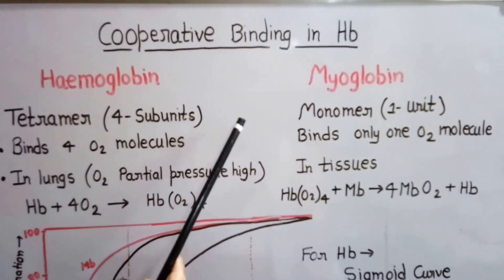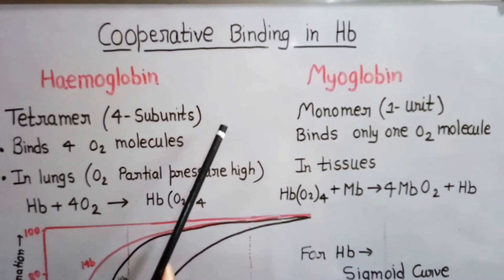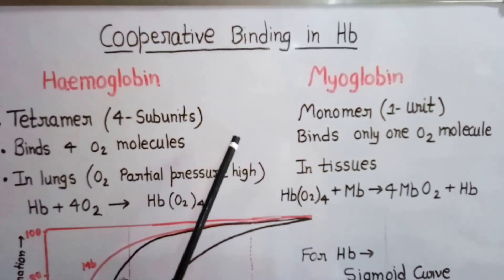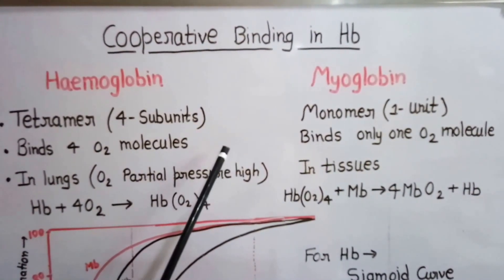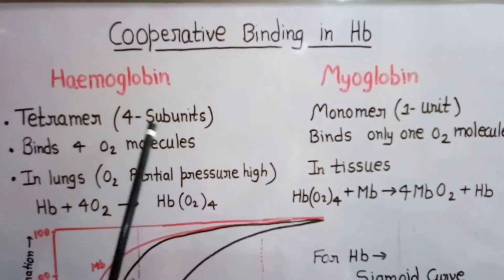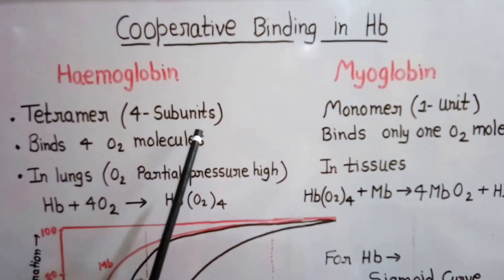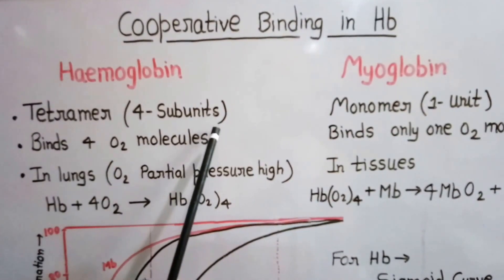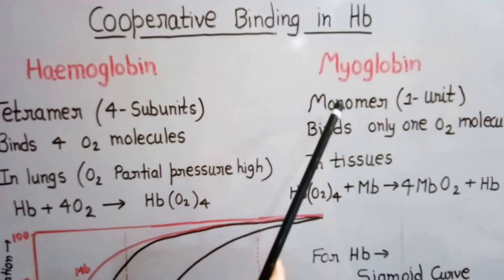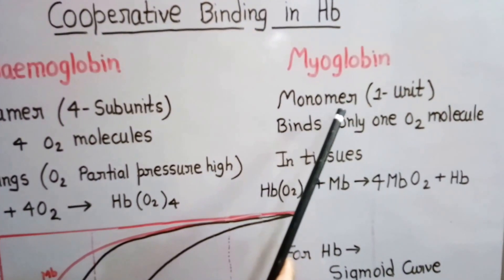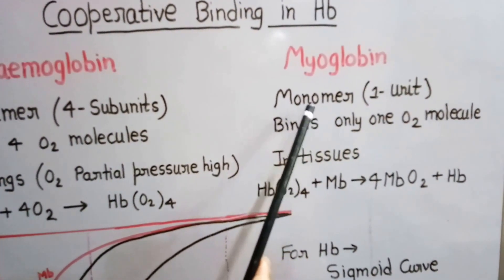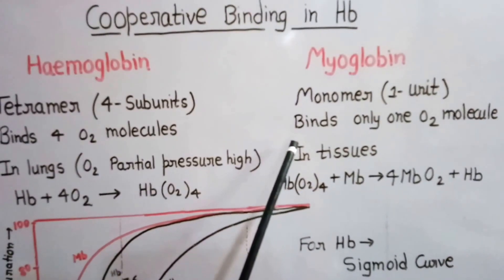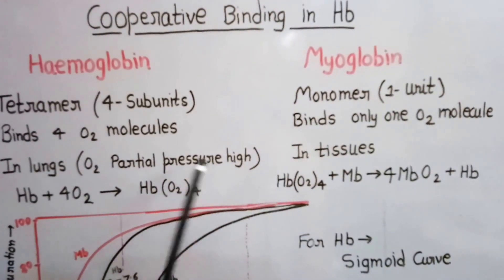We have studied the structure of these proteins in earlier videos. In short, hemoglobin is a tetramer — it possesses four subunits, and its subunits work independently, not interdependently. Myoglobin is a monomer — it possesses one unit, meaning one heme group and a protein chain wrapped around it.